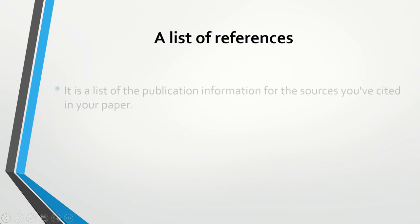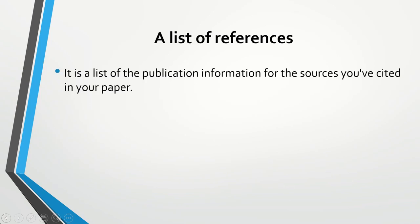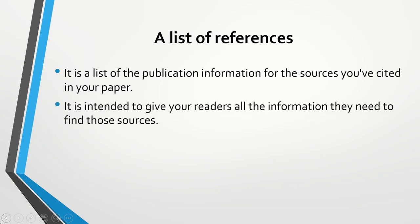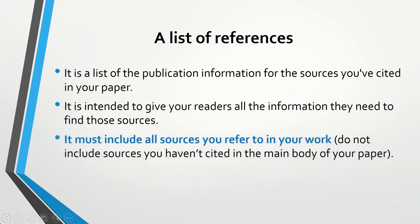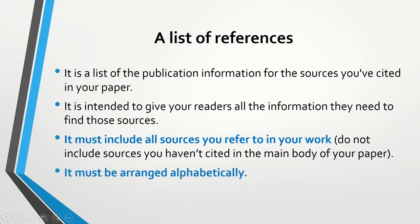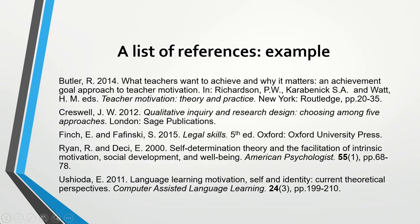Now let's talk about a list of references. It is a list of the publication information for the sources you have cited in your paper, intended to give your readers all the information they need to find those sources. It must include all sources you refer to in your work — please make sure you include all sources used in the main body, and do not include sources you haven't cited. Finally, it must be arranged alphabetically.